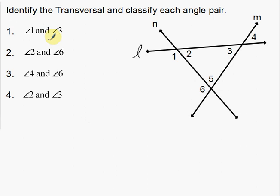Number one, we're going to look at angle one and angle three. We're going to identify the transversal and classify each angle pair. The transversal is a line that intersects two other lines. What might help is that a transversal helps to create the two individual angles. Notice angle one is helped made by L, and angle three is helped made by L. So L is going to be my transversal. Transversal is L.